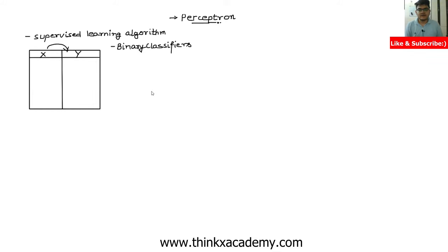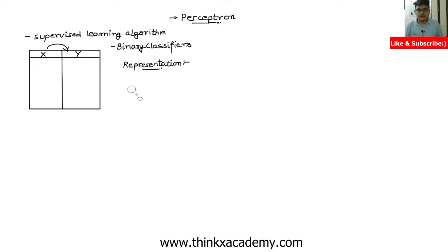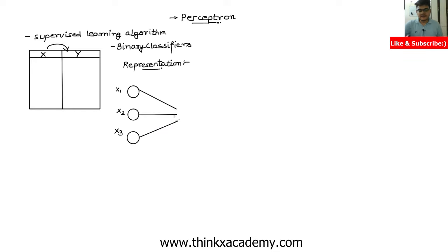Perceptron looks similar to a neural network. I'm going to show you a basic representation of a Perceptron so that you will understand how it is similar to neural networks — it is just simpler. In a neural network, we have the input features or the input layer. So let's say we have input features x1, x2, and x3. We then make weighted channels through all of these inputs, meaning these channels have some weight assigned as weight one, weight two, and weight three.